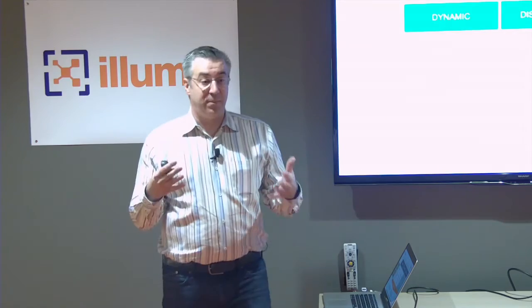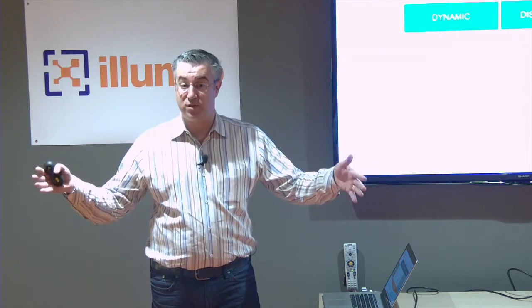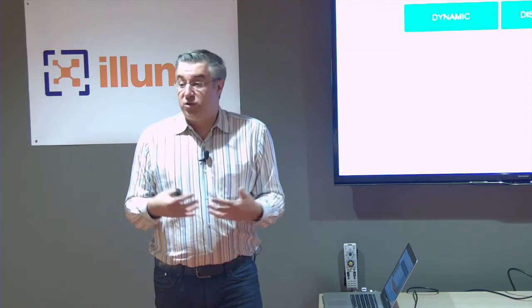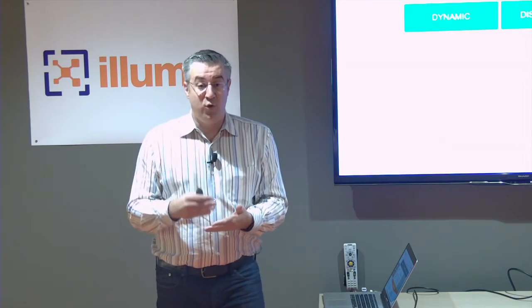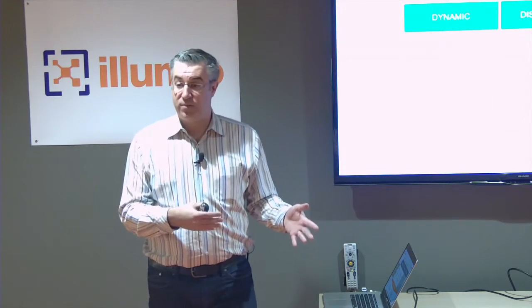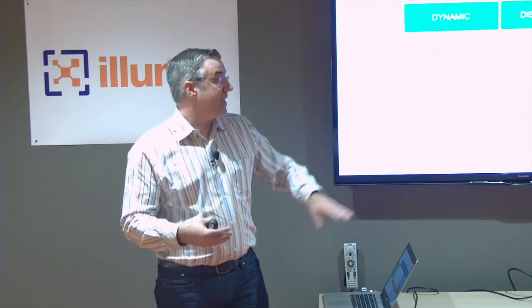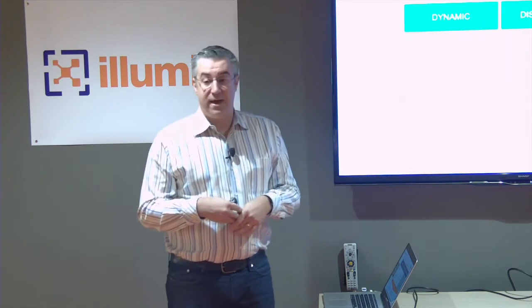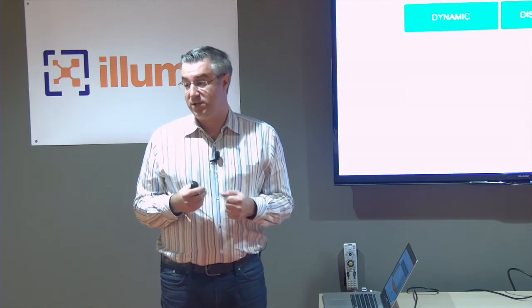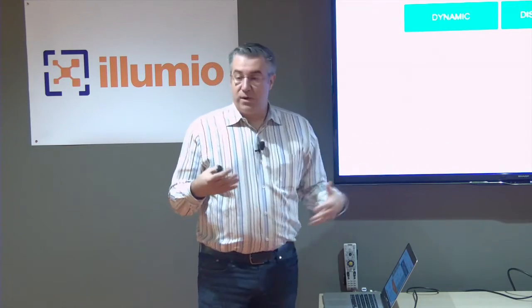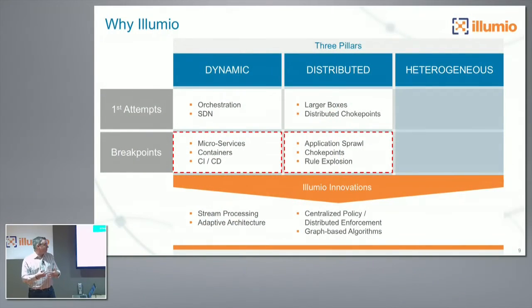The break points are application sprawl — workloads for applications can be anywhere in the data center. Where are choke points supposed to be? How many do you need? Who is going to manage all of this infrastructure? And the third problem is rule explosion: if you really want fine-grain segmentation, the number of rules increases dramatically — we've had people tell us they have three and a half million firewall rules to address their segmentation. So Illumio followed a centralized policy, distributed enforcement model — pushing everything to the edges where there's application context, returning to the founding principles of the internet: smarts at the edges.